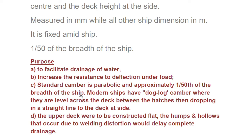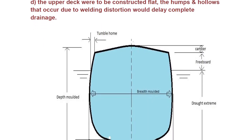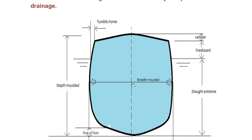Standard camber is parabolic and approximately 1/50th of the breadth of the ship. Modern ships have 'dog lock' camber where they are level across the deck between the hatches, sloping in a straight line to the deck at the side. If the upper deck were constructed flat, humps and hollows from welding distortion would delay complete drainage. In the diagram, camber is the difference in height between the side and amidship.